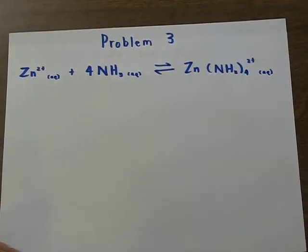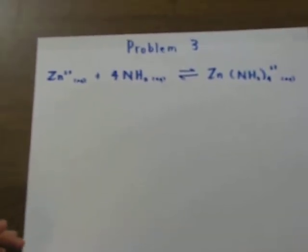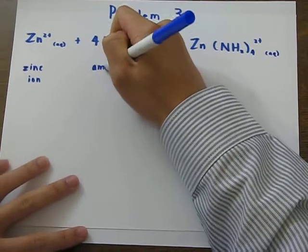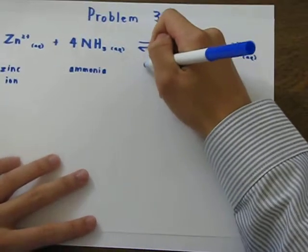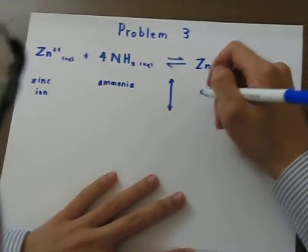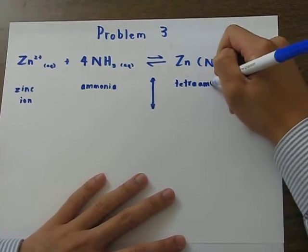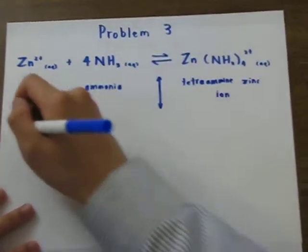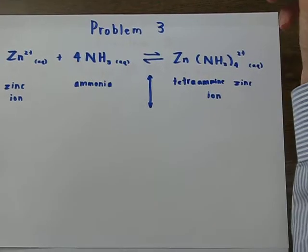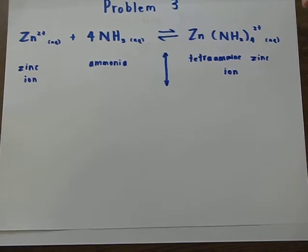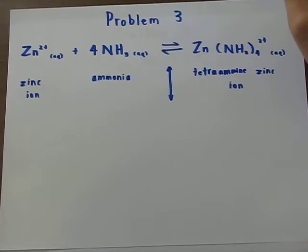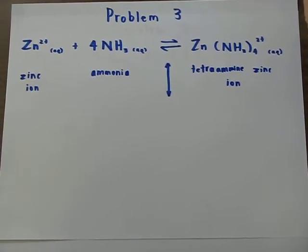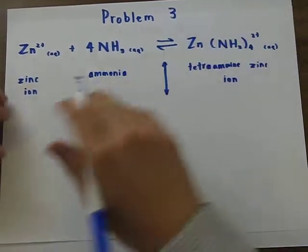So what we have here is the zinc ion, aqueous, and four ammonias, also aqueous. We draw the little arrow, and here we have a complex ion. This is the tetraamine zinc ion. So let's draw the Lewis - this problem is interesting before we begin. This problem is interesting because by the Bronsted-Lowry definition, this is actually not an acid-base reaction, since there are no hydrogen ions or hydroxide ions involved. Thus, Lewis acid and base theory allows us to explain the formation of these complex ions and other species which do not contain hydrogen or hydroxide ions.